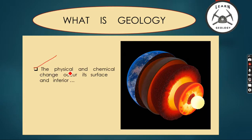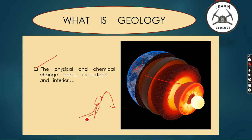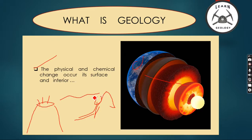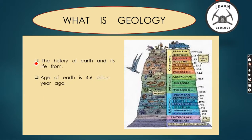The second point is the physical and chemical changes that occur at the surface and interior. On the earth's surface, we study why landslides occur and what the reason behind them is, why volcanism occurs and what the reason behind it is, why earthquakes occur and what the reason behind them is, and why tsunamis occur and what the reason behind them is.